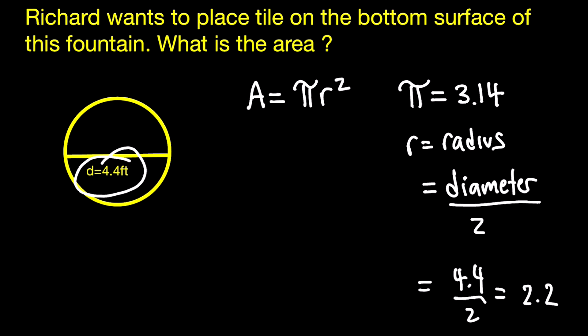So now you can plug that number into your equation. So we would end up with area is equal to pi, or 3.14, multiplied by the radius squared, 2.2 squared.